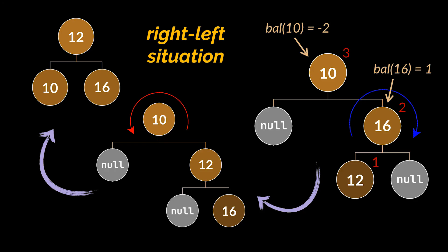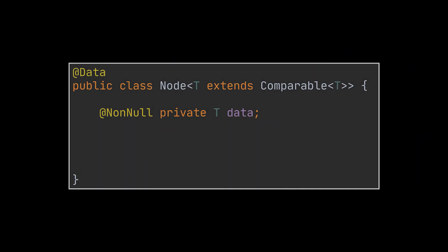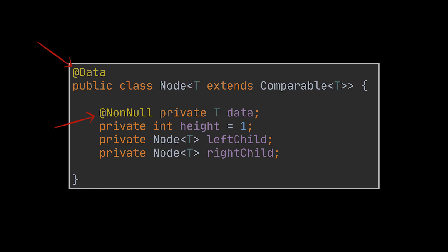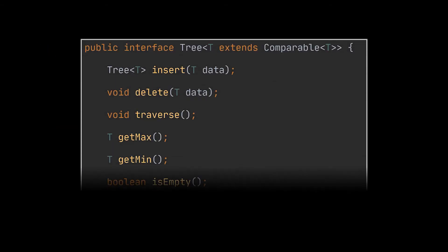Let's implement AVL trees. We start with the Node class, which wraps our data and holds left and right children, just like a BST node. Additionally, this class tracks the height of the node, which defaults to 1 upon creation since a newly inserted node starts as a leaf. The data is made generic to hold any object type. The annotations shown are Lombok annotations, which reduce boilerplate code such as setters, getters, toString, and constructors.